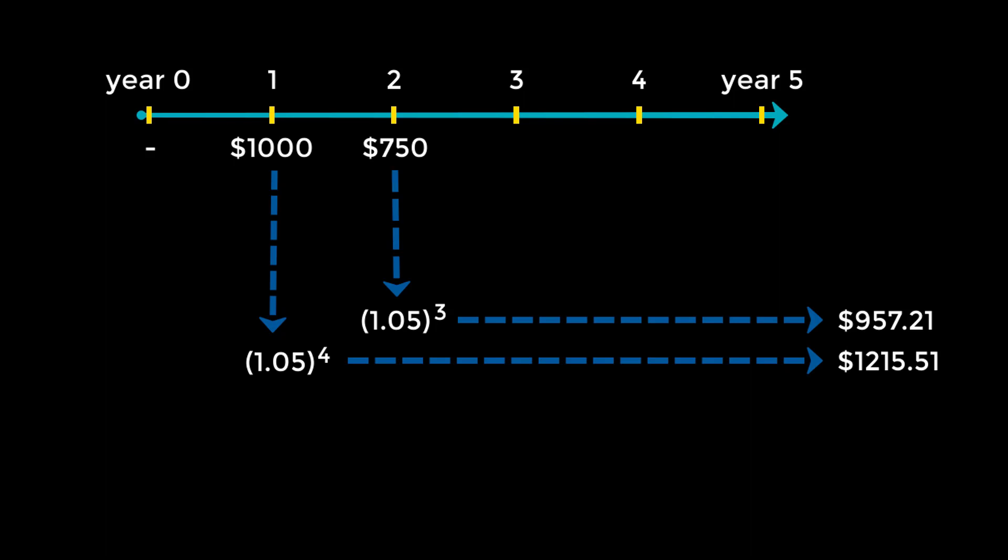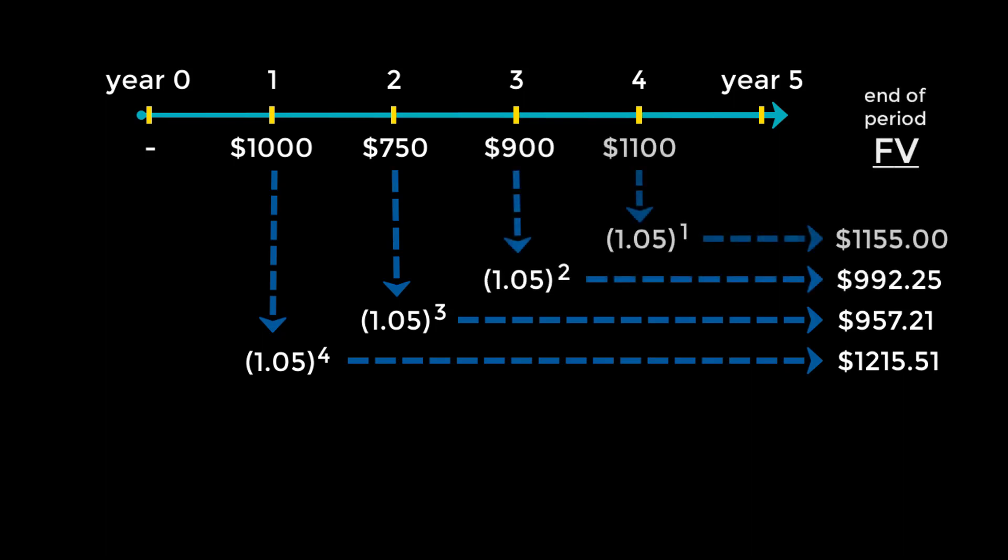Each of these individual payments can be called a cash flow, and can be thought of as a separate entity. So for example, the $1,000 is the year 1 cash flow, and the $750 is the year 2 cash flow. So suppose we do the same thing next year, with $900, and the year after that, with $1,100, and the year after that, with $2,500. The concept is still the same. Apply the Future Value formula to each cash flow. The sum of all these cash flows is the total future value of multiple cash flows.